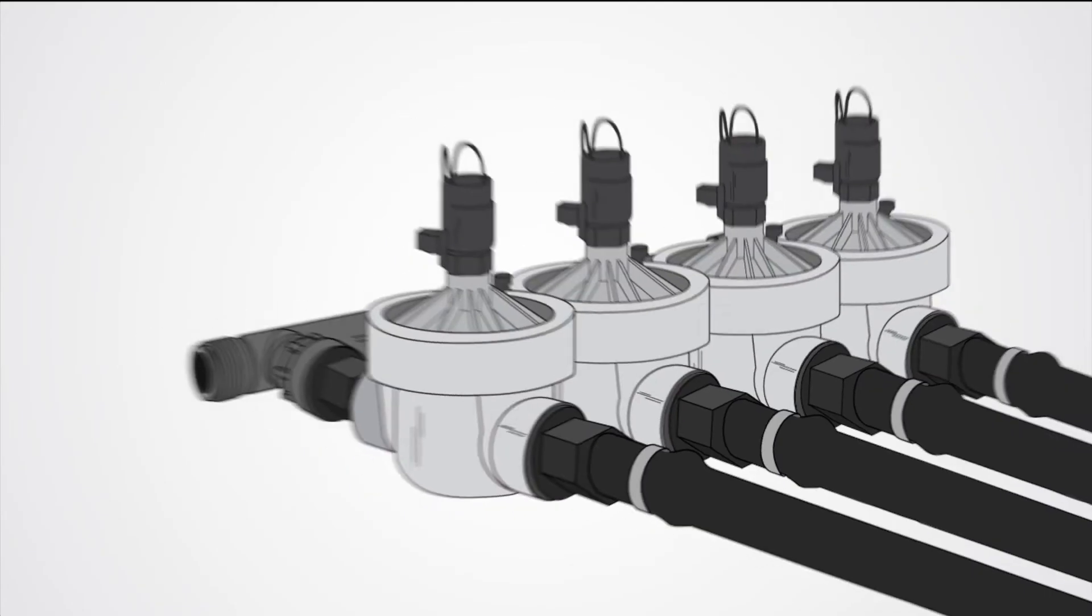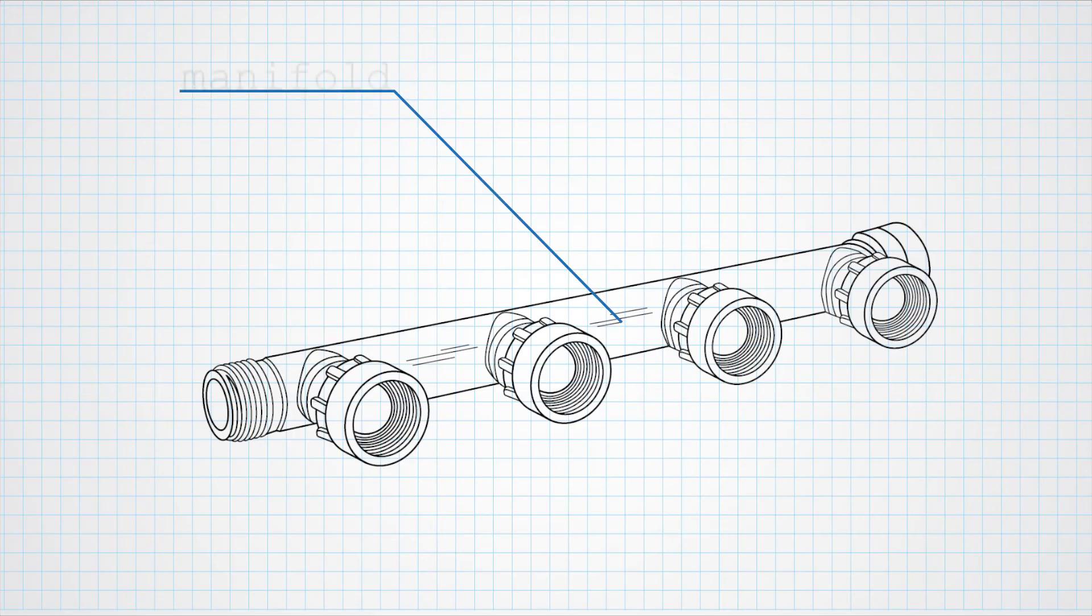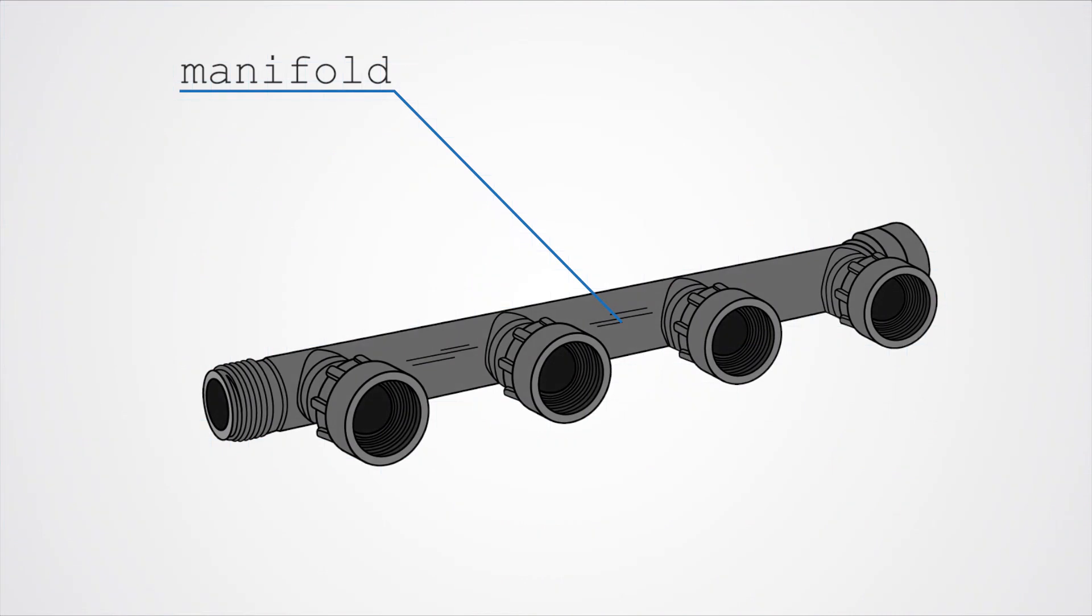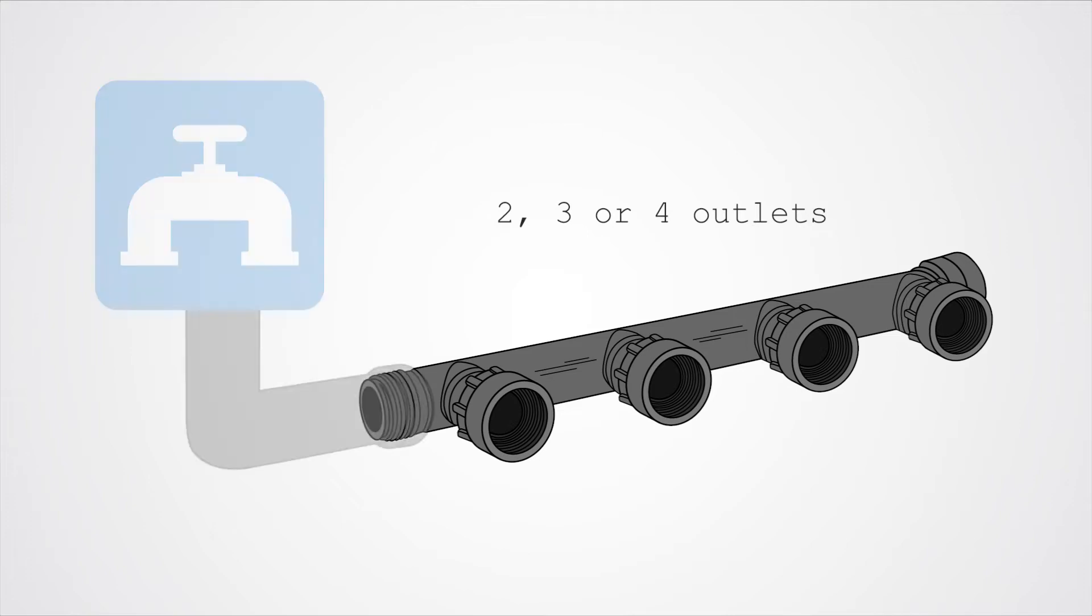The number of solenoids you need depends on the size of the system and how many zones you want to water at the same time. The manifold houses your solenoid valves. It has two, three, or four outlets and acts as the middleman between your water source and irrigation system.